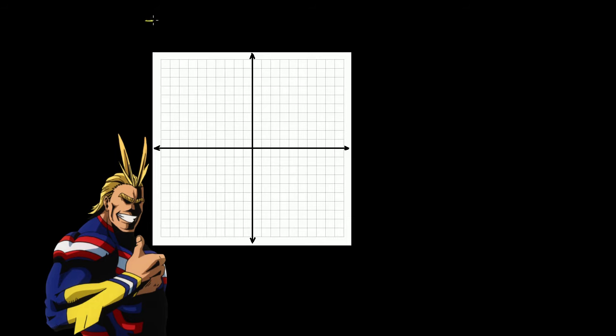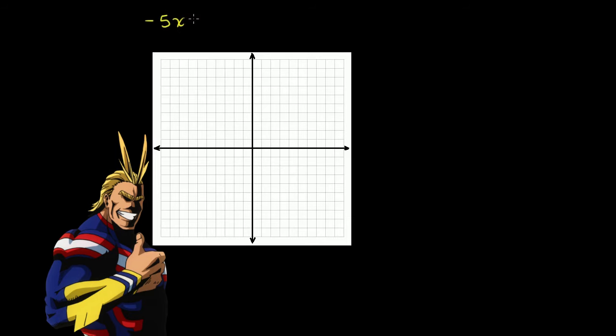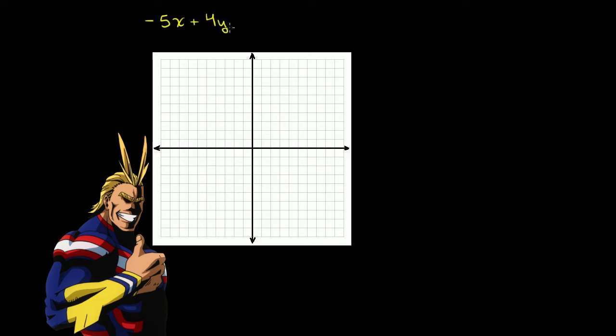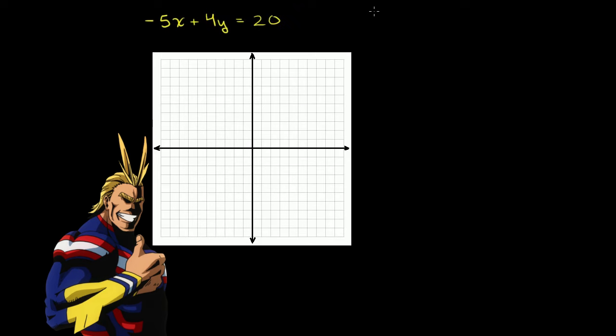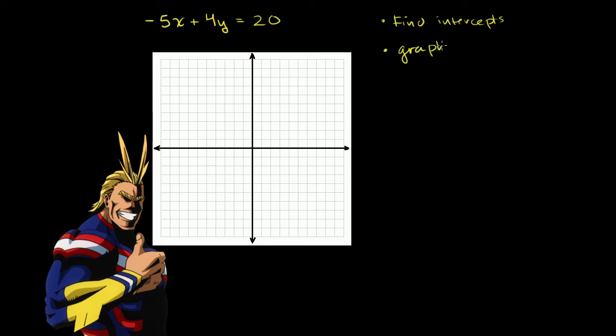We have the equation -5x + 4y = 20, and we're told to find the intercepts of this equation, and then use the intercepts to graph this line on the coordinate plane.